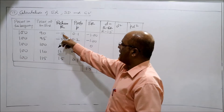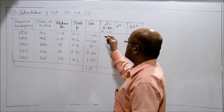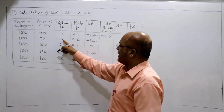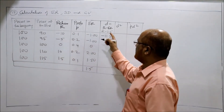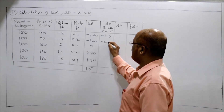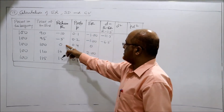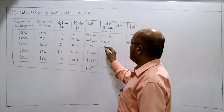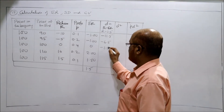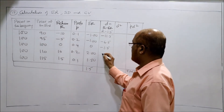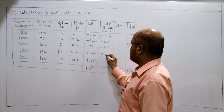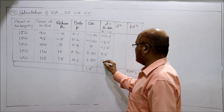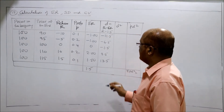Now minus 10 minus 1.5 is minus 11.5. Minus 5 minus 1.5 is minus 6.5. 0 minus 1.5 is minus 1.5. Then 10 minus 1.5 is 8.5. 15 minus 1.5 is 13.5.